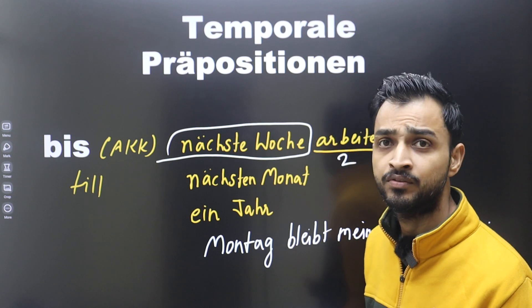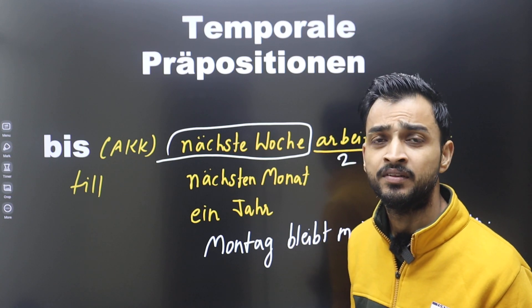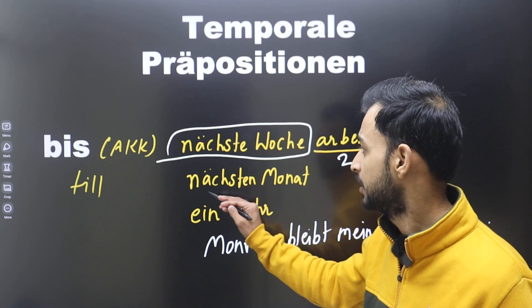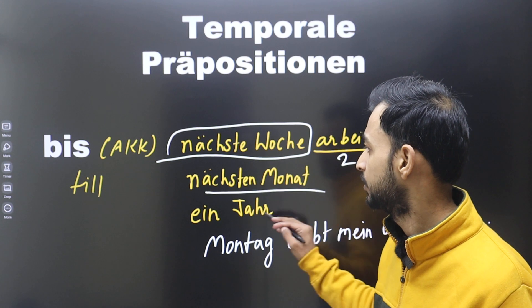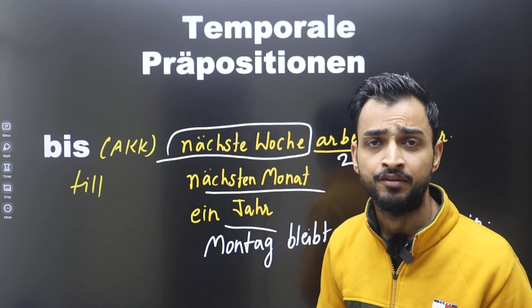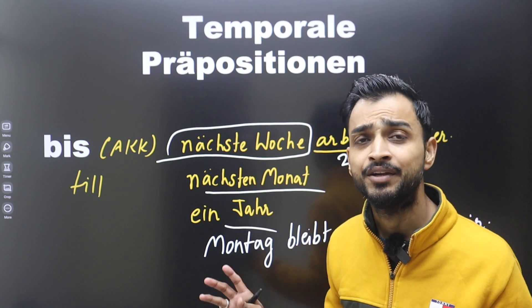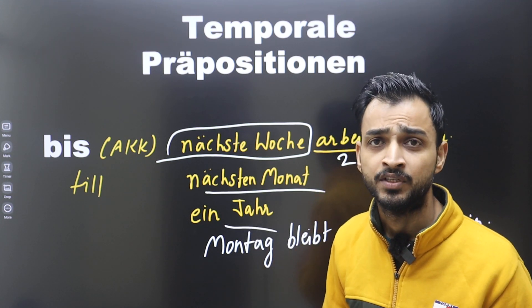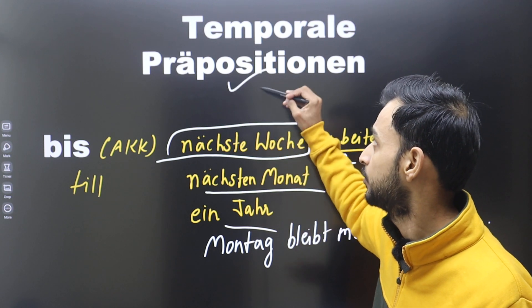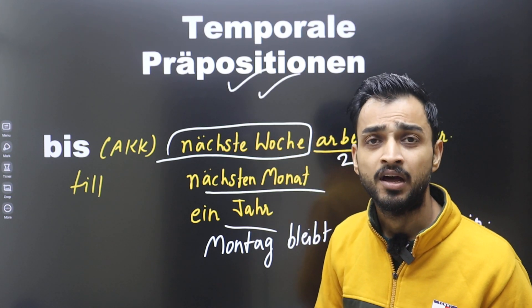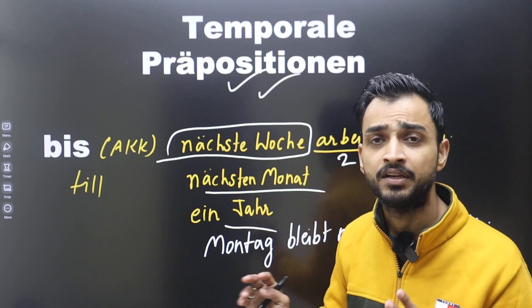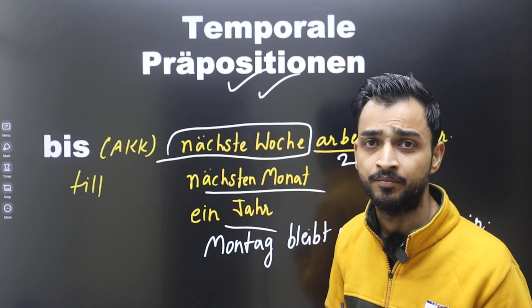We can also say 'bis nächste Woche' and 'bis nächsten Monat.' These are accusative prepositions related to time — that's why they are called temporal prepositions.